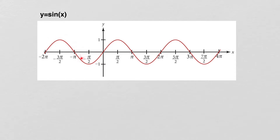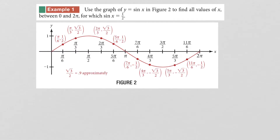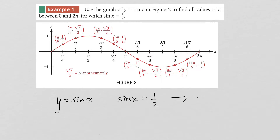So you get sort of this infinite wave function. In our first example, we want to use the graph of y equals sine of x to find all values of x between 0 and 2 pi for which sine is equal to 1/2. So we're looking at where sine of x equals 1/2, meaning we need to identify all points on the graph where y equals 1/2.